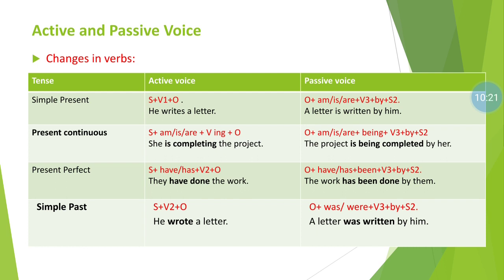Present perfect tense: active structure is subject + have/has + V3 + object. For example, 'They have done the work.' To transfer to passive: object + have/has + been + V3 + by + subject (second form). So the passive becomes 'The work has been done by them.' Present perfect continuous tense cannot be changed to passive because we do not have an additional helping verb.